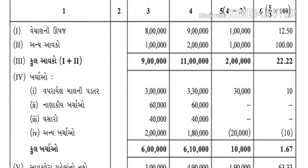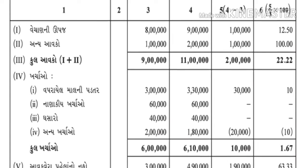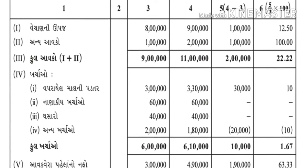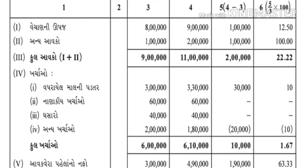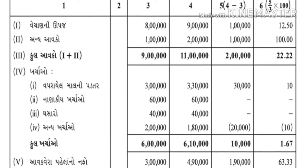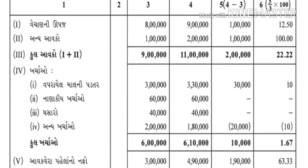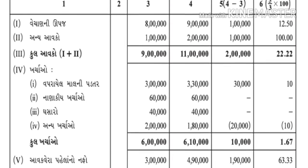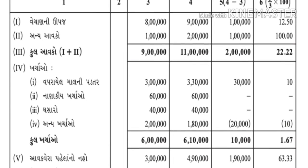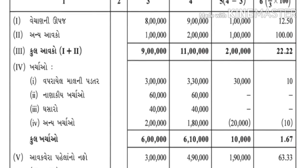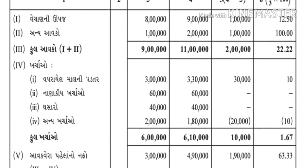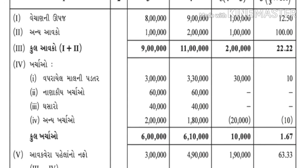ટકાવારી શોધવાનો પ્રશ્ન આવે, ત્યારે ત્યાં ડૅશ કરવાનો. કારણ કે 2016ની રકમ ઓછી હતી, એટલે આપણને બધી જગ્યાએ વધારો ઉપ્પર થતો હતો. પણ અહીં ઉલ્ટું - 2016ની એક લાખ એંસી હજાર - 2017ની - 2016ની વર્ષ - 2016ની રકમ - ત્યારે 2016ની રકમ 2017થી વધારે છે.